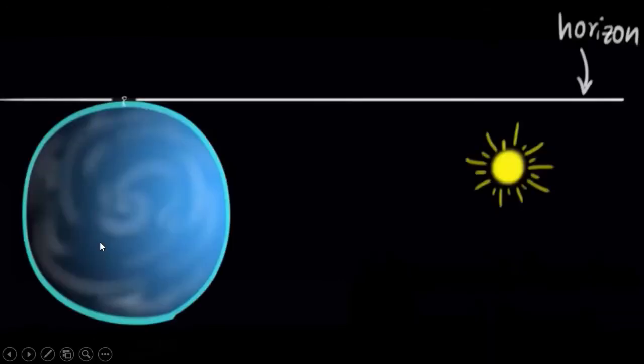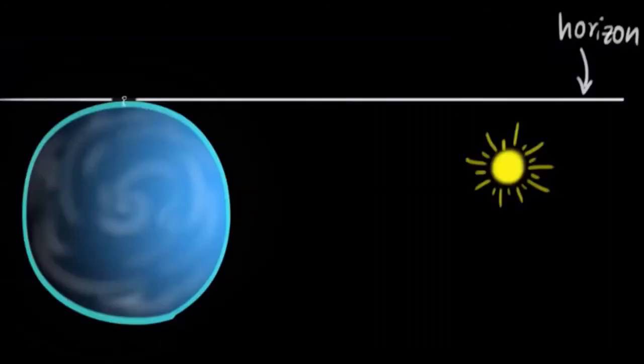Let's see what we mean by advanced sunrise. Consider yourself on the earth, and this is the Sun. Now this is the horizon — the horizon is the largest distance which you can see. The earth is rotating, which is why we are able to see the day and night phenomena.